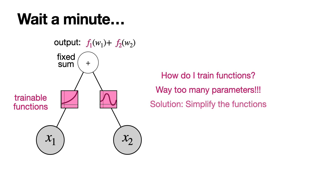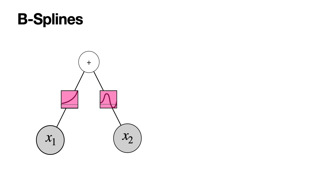The solution is that we're not going to take all the functions, but vastly simplify them. We're going to find a smaller family of functions that we can express with a bunch of parameters, and then train those parameters. For this, we need something called splines — B-splines. A great way of approximating functions is using B-splines. So let me tell you what a B-spline is.